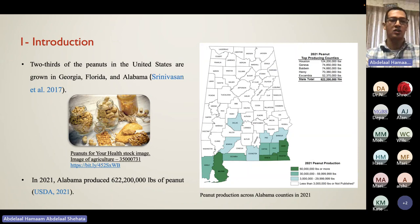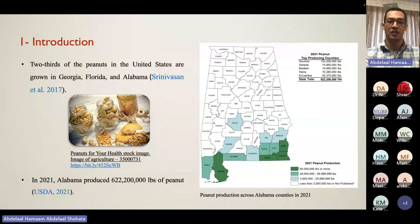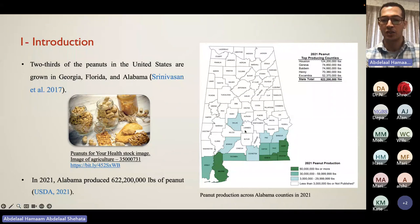As an introduction, peanut is a big production in the US, especially in our three southern states — Florida, Alabama, and Georgia — because these three states plant two-thirds of the total peanut production in the USA. In Alabama alone, in 2021, it was reported that the state produced 622 million pounds of peanut.